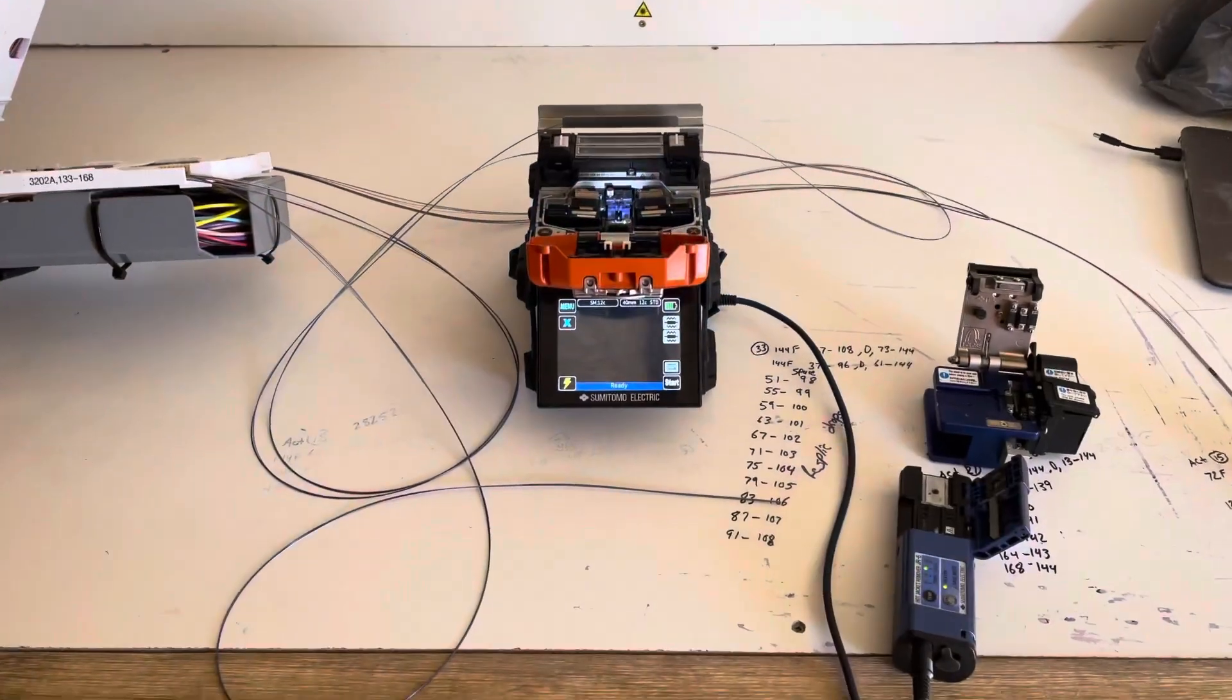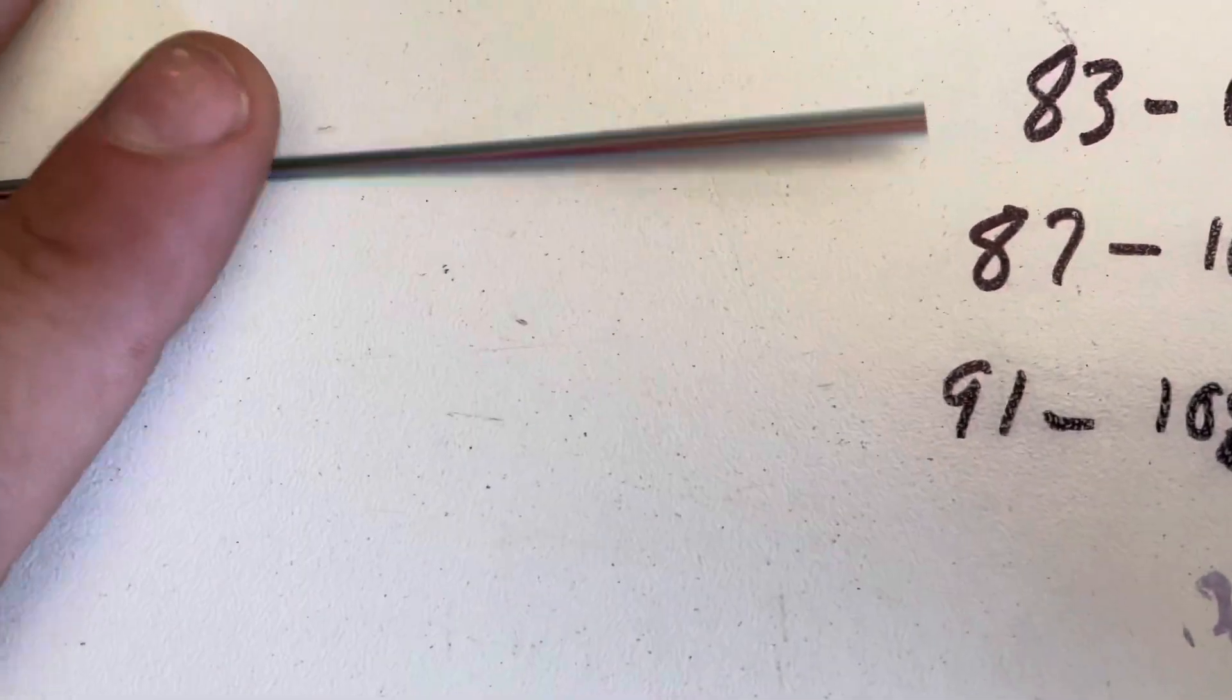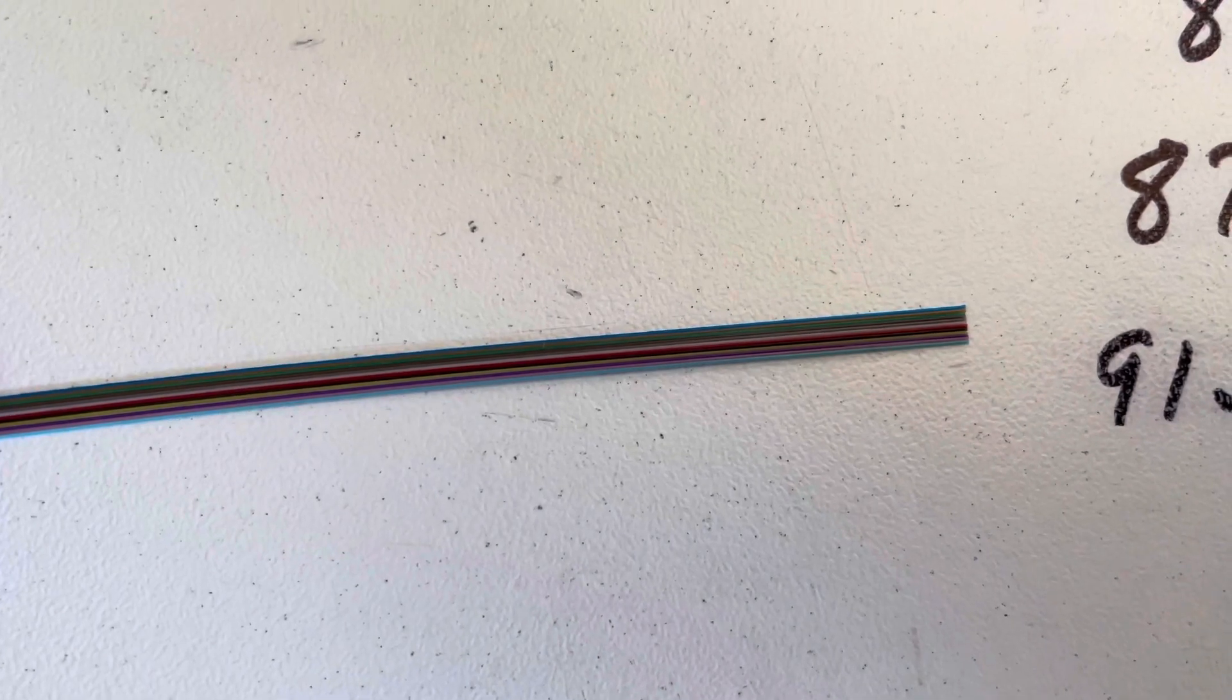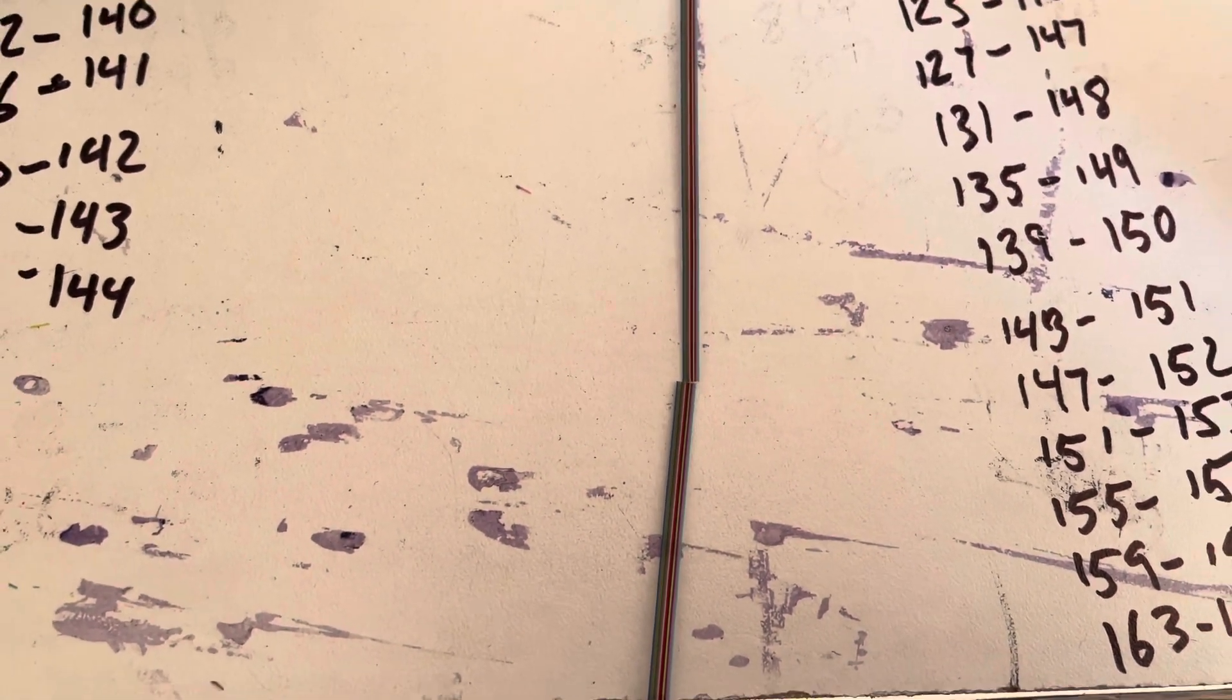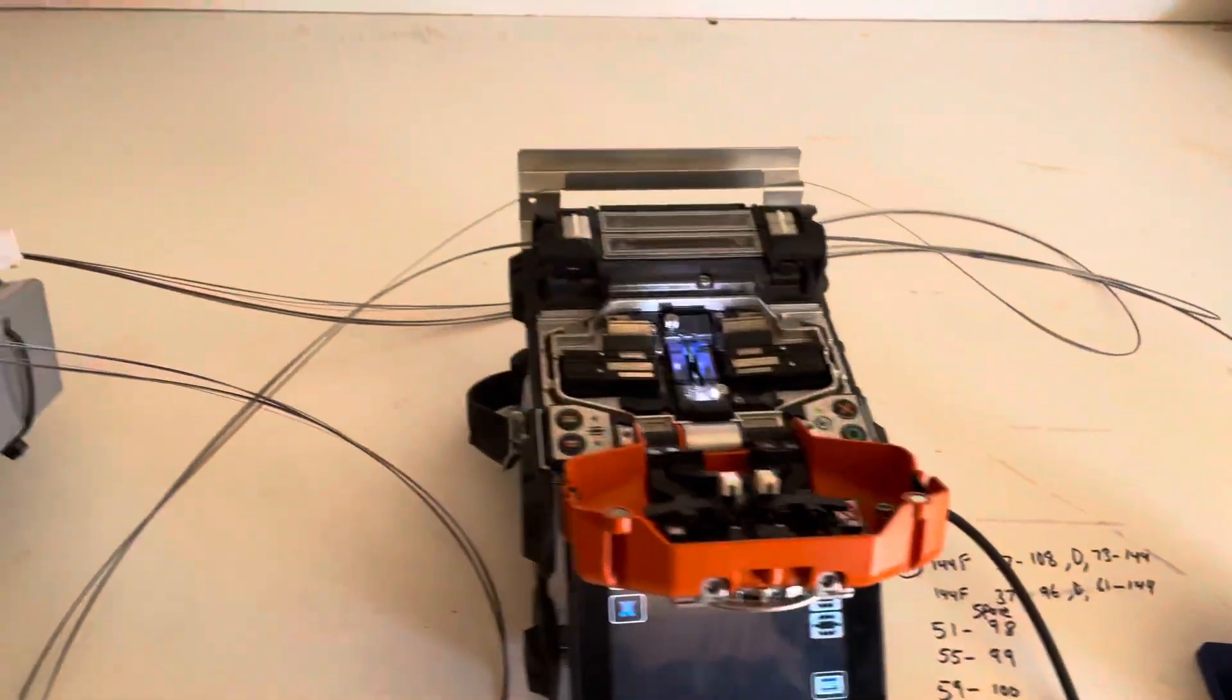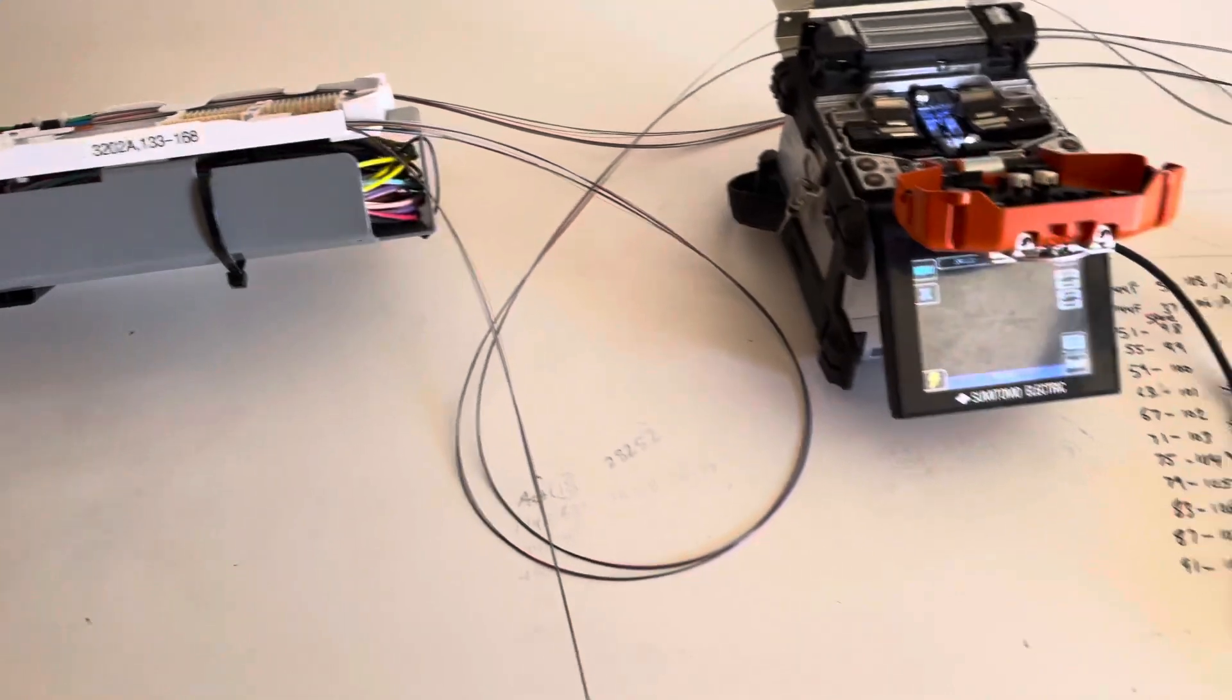All right, so we're looking to splice some ribbon here. As you can see, we have a perfect color code within the ribbon: blue, orange, green, brown, slate, white, red, black, yellow, violet, rose, aqua. When splicing ribbon, you have to keep both sides running up properly so you're going to have blue to blue and aqua to aqua. All fibers must connect to the exact same color. If you were to splice it like this, aqua up with blue up, you're going to have a thing called a flipped ribbon, but your counts are not going to align when splicing them. You will only find that out once you go ahead and test the network and you see the counts and distances do not match with the original design.